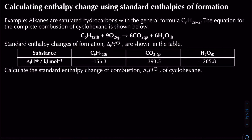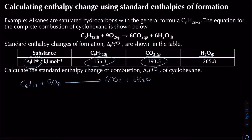The table gives ΔHf values for cyclohexane, carbon dioxide, and water. We take the original combustion equation — C₆H₁₂ plus 9O₂ forming 6CO₂ plus 6H₂O — and form a Hess's law cycle. The enthalpy change of formation values represent the energy required to form one mole of each compound from its elements in their standard states.